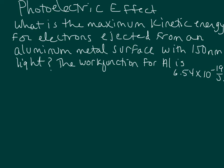Here's an example calculation for the photoelectric effect. We are looking for the maximum kinetic energy for electrons that are ejected from an aluminum metal surface. We're going to use 150 nanometer light, and we're also told that the work function for aluminum is 6.54 times 10 to the negative 19 joules.